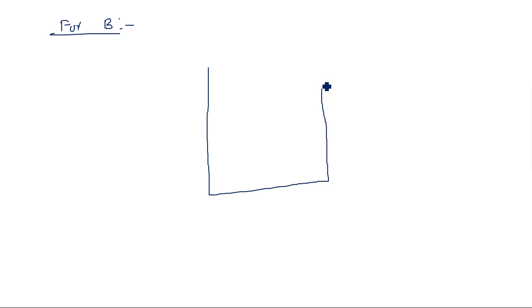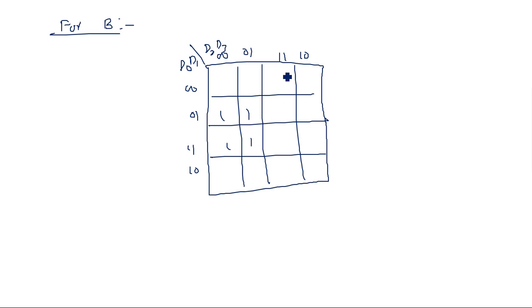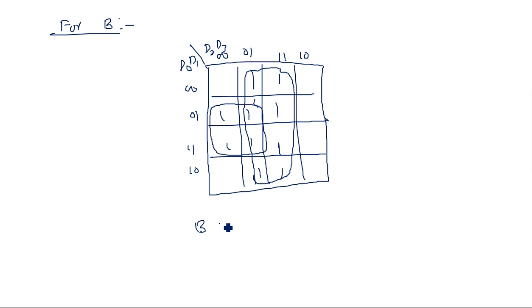Similarly for output B, we use a 4-variable K-map with inputs D0, D1, D2, D3. After placing all the 1s in the appropriate locations, the 8 ones can be grouped as one prime implicant and the remaining 4 ones as another prime implicant. So there are two prime implicants, giving: B = D3 + D2_bar·D1.